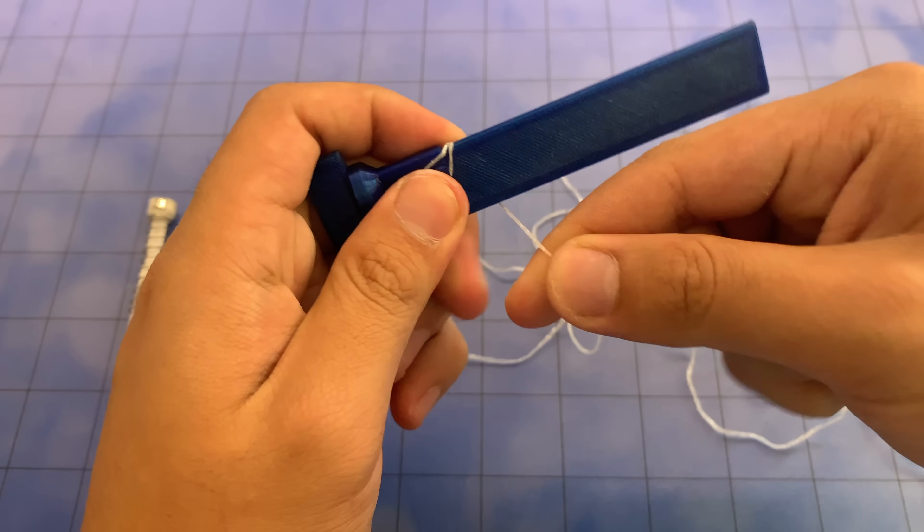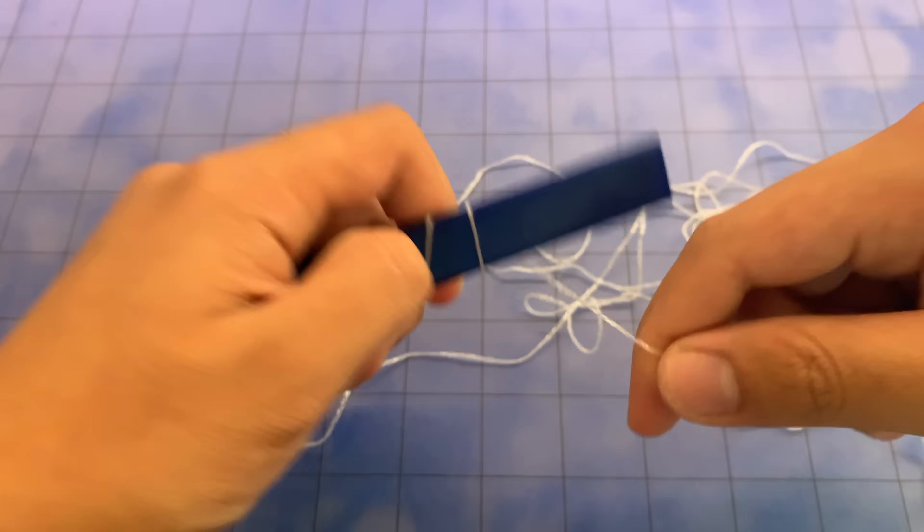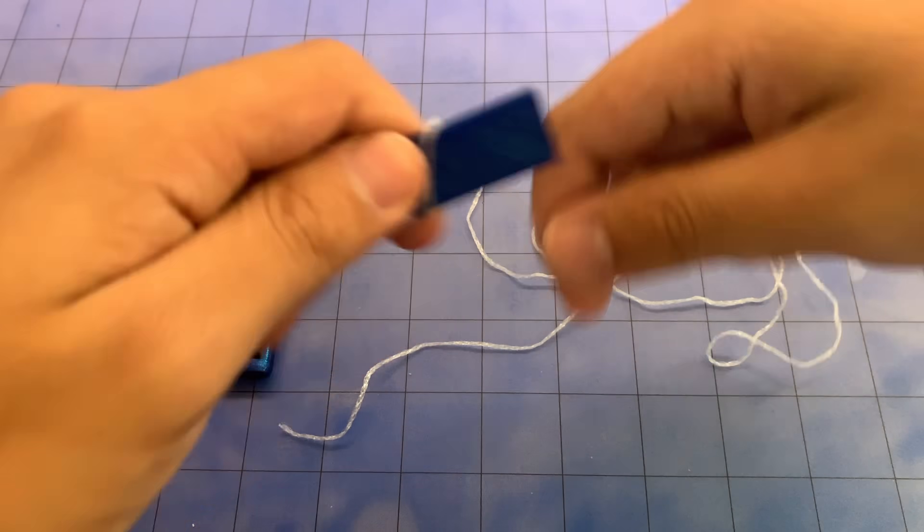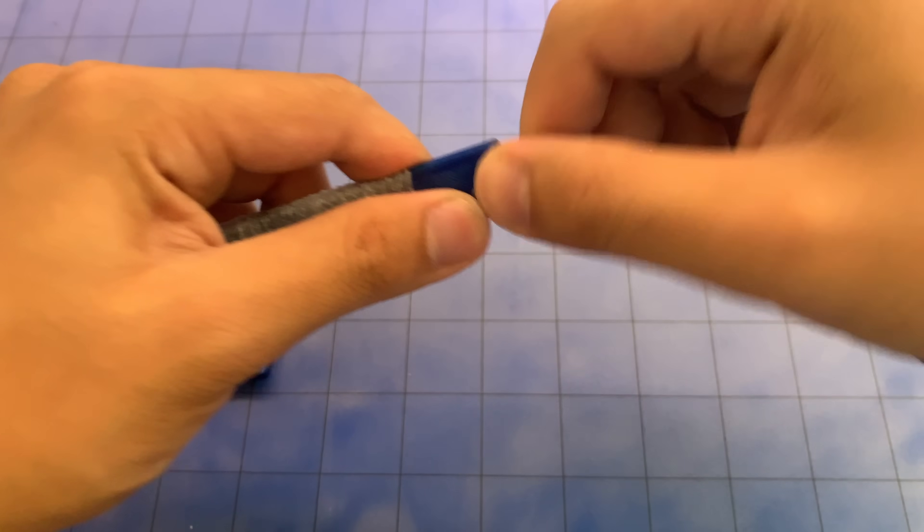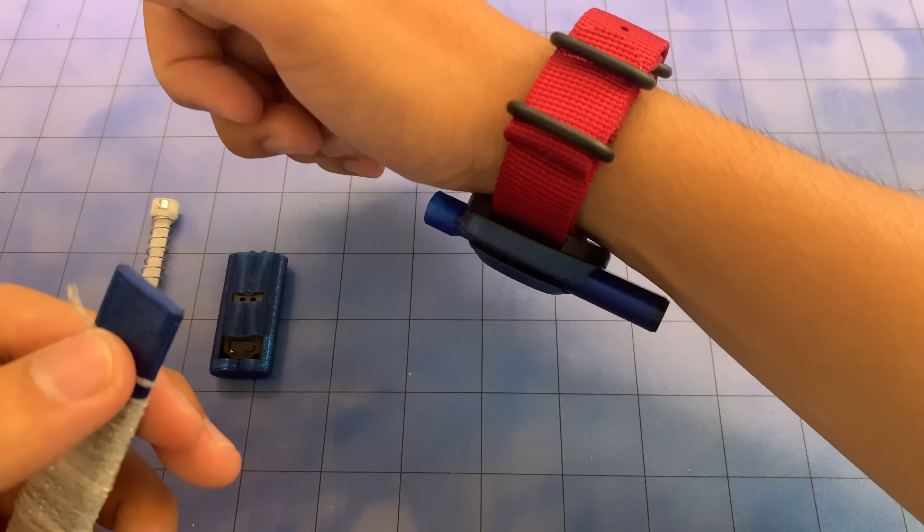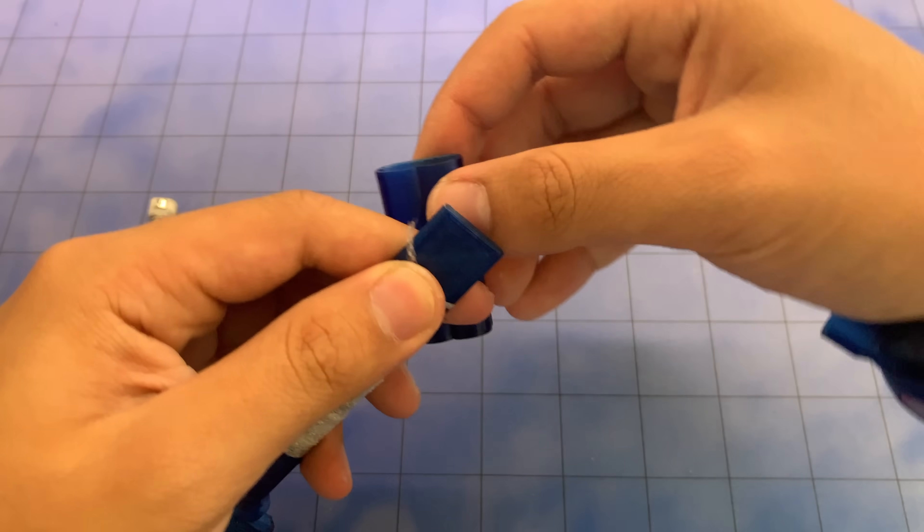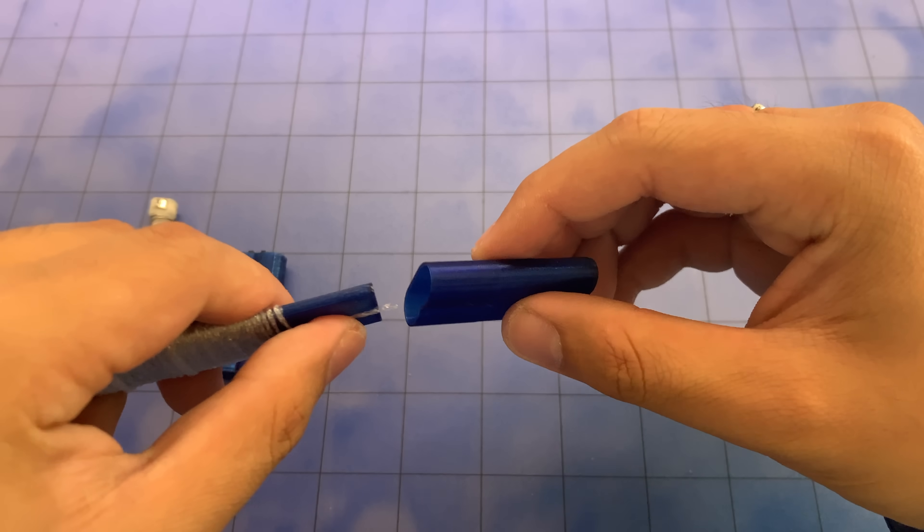Then pull it tight and you can start winding it. Just like that. The winding is done. The cartridge is still in so take that out and slot that through.